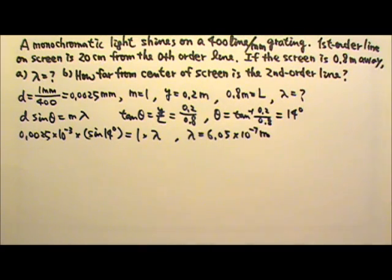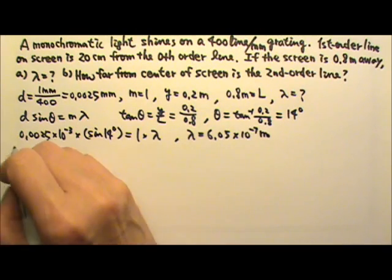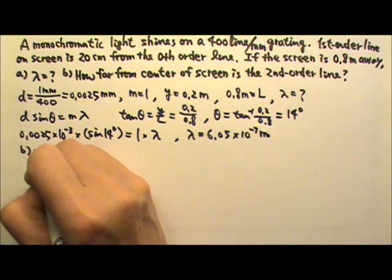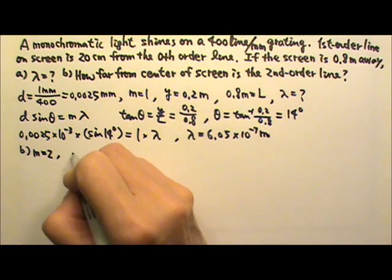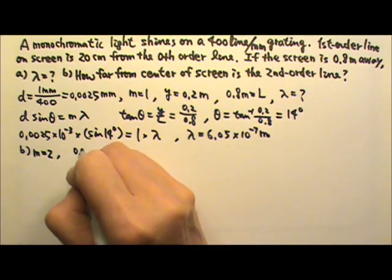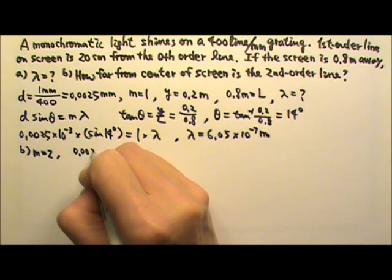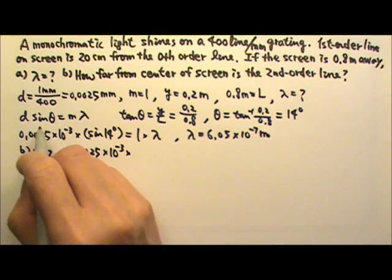So this is some sort of orange light. And then part B. We want the second order. So M equals to 2. And that means D sine theta equals to M lambda. The D will still be 0.0025 milli times the sine theta.